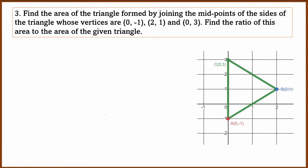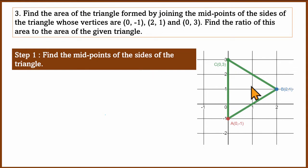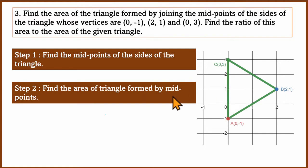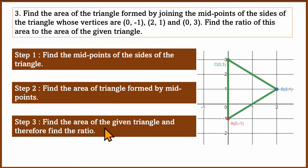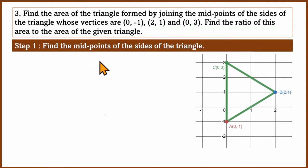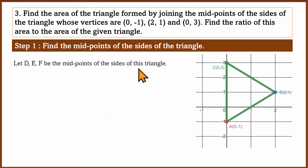The given vertices are: point 1 is (0, −1), point 2 is (2, 1), and point 3 is (0, 3). We plot these on a graph sheet. First, we find the midpoints. Let D, E, F be the midpoints of the sides of this triangle. The midpoint formula is: x1 plus x2 divided by 2, and y1 plus y2 divided by 2.